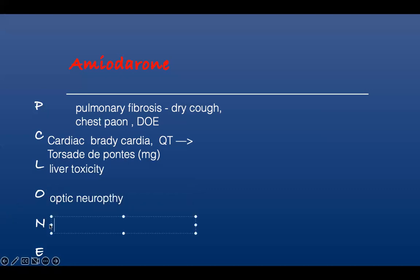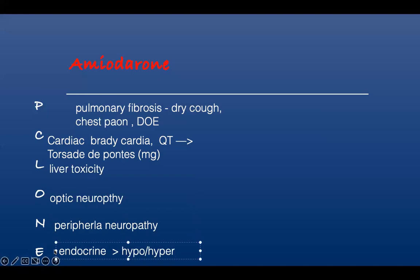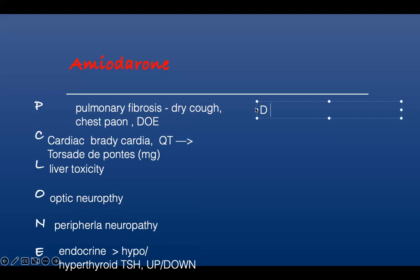And then the neuro, you can also guess it's a neurological problem. So peripheral neuropathy. The E is endocrine. So it can either cause hyperthyroidism or hypothyroid problem. So the TSH will go up or TSH either up or down. And the last one is the D. So P-CLONED because dermatitis and the specific dermatitis is a blue. They have like blue gray skin lesions.